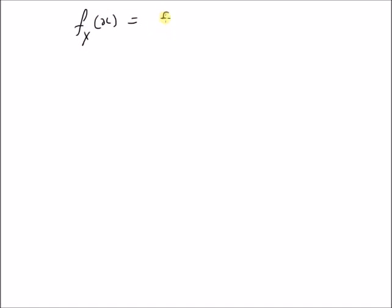Hello, welcome. In a short video, let us look at a derivation of the moment generating function of an exponential PDF. Given the following exponential PDF: f_x(x) is equal to (a/2) times e to the power of negative a times the modulus of x, for all values of x on the real line. Given this PDF, our goal is to find the moment generating function (MGF) of this PDF.